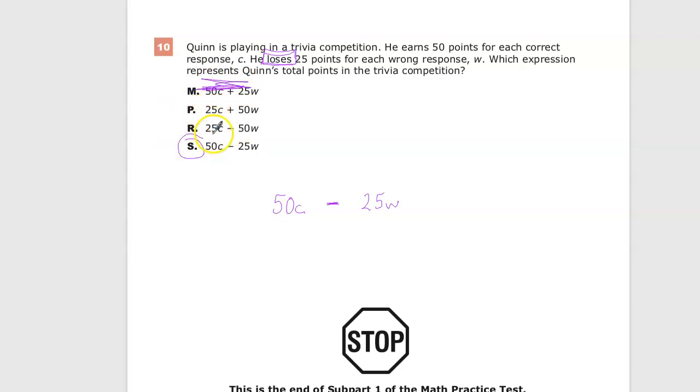And P and R are matching the wrong variable to the wrong coefficient, so they switched them. 25 points for correct answers is what this says, but it's 50 points. 50 points for incorrect answers is what this says, and that's not right. So there's no way that these can match up. So my answer to number 10 is S.